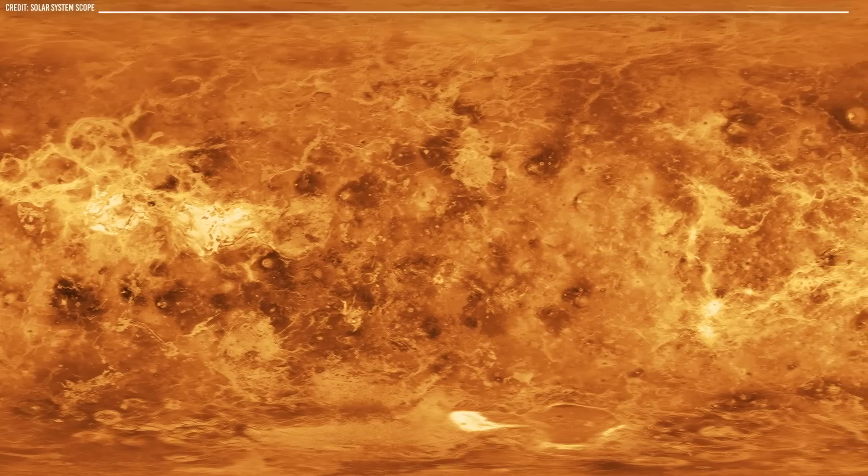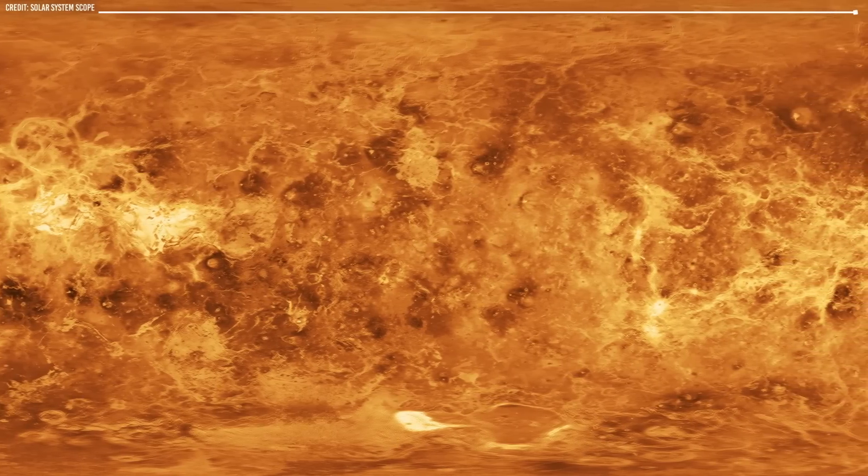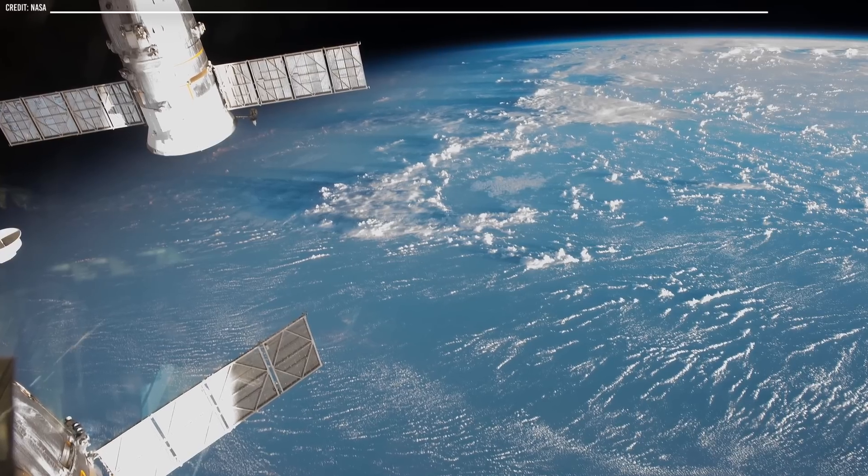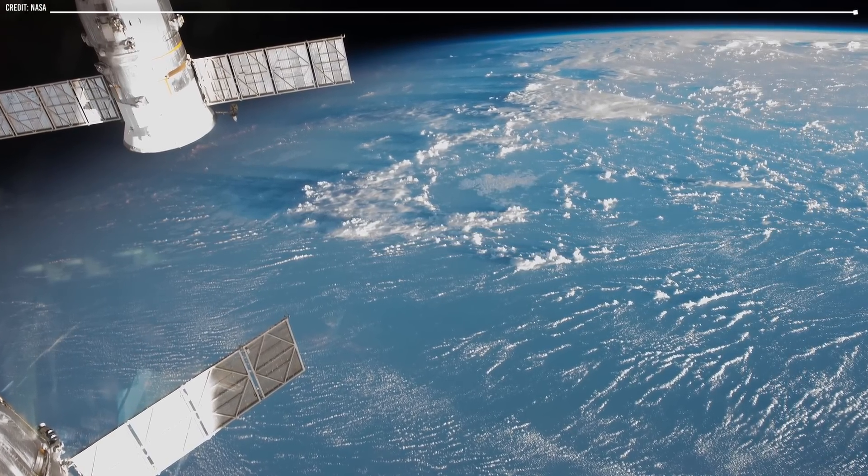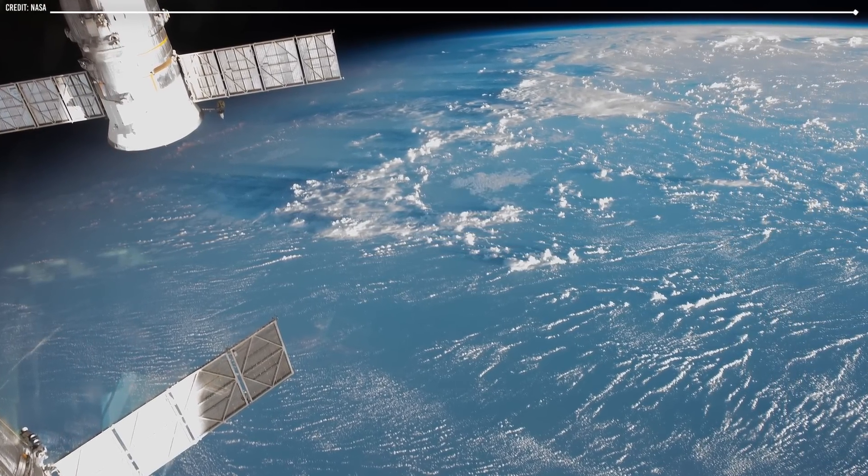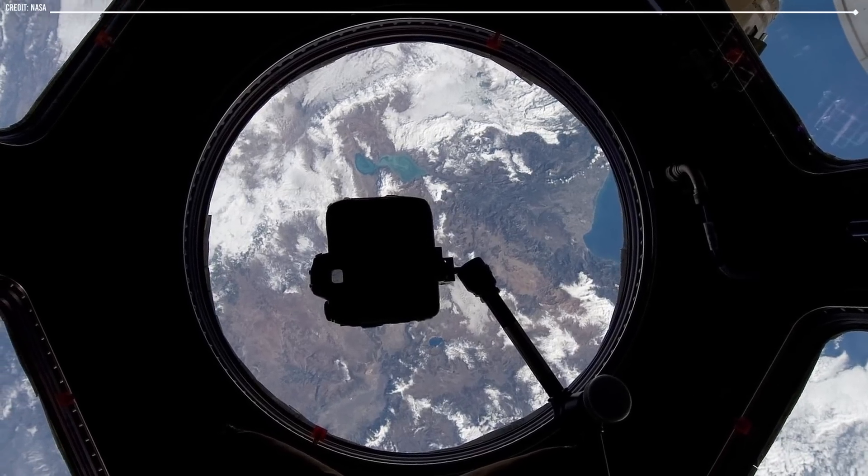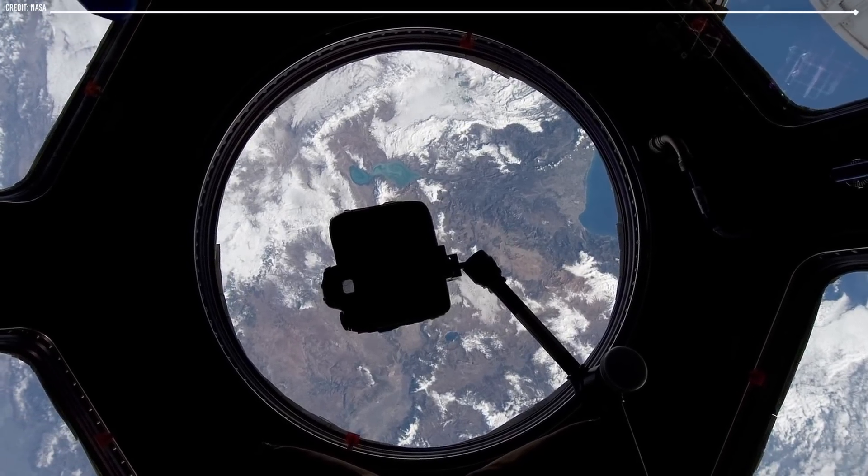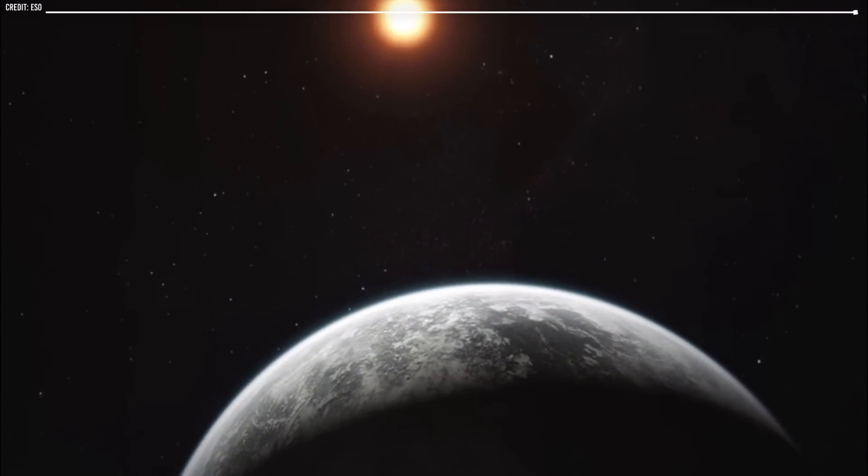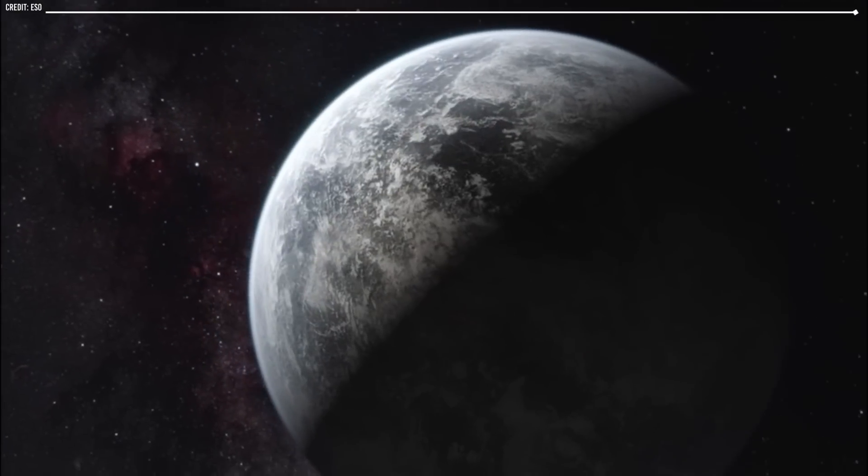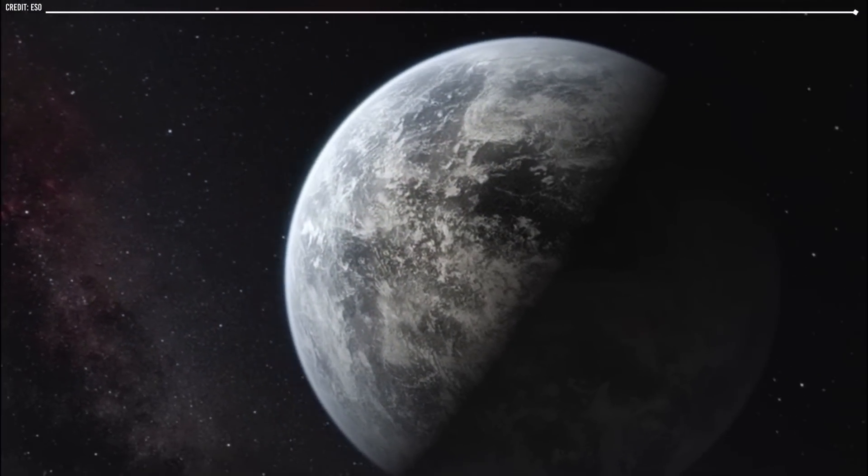The study of Venus and Earth offers insights into the factors that contribute to the habitability of planets. As we continue to explore our solar system and beyond, it will be important to understand how these factors work together to create and sustain life, and how they may vary on other planets. Ultimately, this knowledge may help us to identify habitable environments elsewhere in the universe, and to better understand the potential for life beyond our own planet.